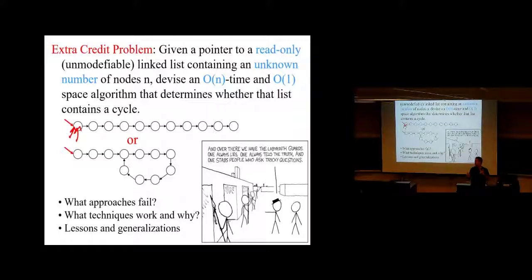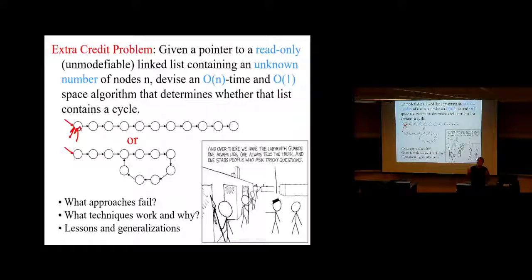So when one pointer jumps the other, it doesn't really jump it — it slowly overtakes it one at a time and you can check each time. Both solutions would work. Two times the speed, three times the speed, five times the speed — as long as it's a constant number. Any constant multiple of speed will work, though we can debate whether it's slightly more or less efficient.